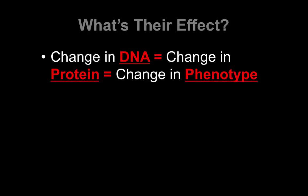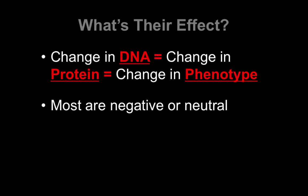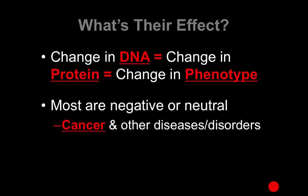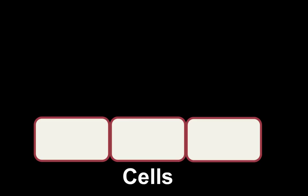The effect is: if you change the DNA code itself, you change the protein, and if you change the protein, you can change the trait or phenotype. So if you change the genotype, you change the phenotype. Most of the time when this happens, it's bad — it's negative. Sometimes it doesn't have any appreciable effect, but most of the time it's negative. Things like cancer and other diseases or disorders are definitely negative.